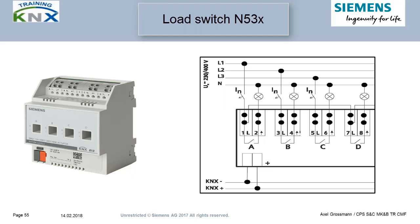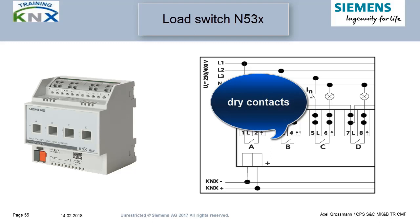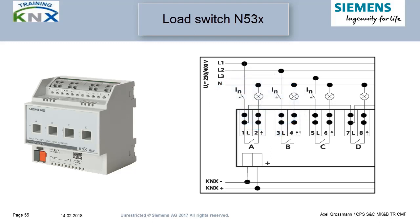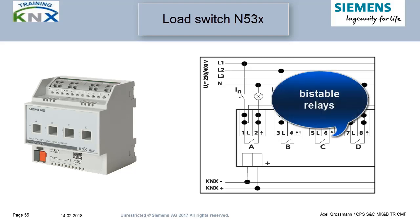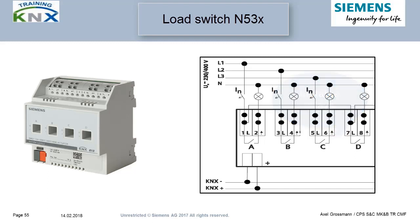A concrete example: the Siemens switching actuator N53X. The wiring diagram looks quite unspectacular, but you can recognize that the relays are independent from each other, so the actuator can also operate on different phases. It has bi-stable dry contacts, which can keep their condition in case of bus voltage or mains voltage failure. They can also be driven to a certain position in case of bus or mains voltage failure. A neutral conductor is not required — the device is controlled solely by the bus.